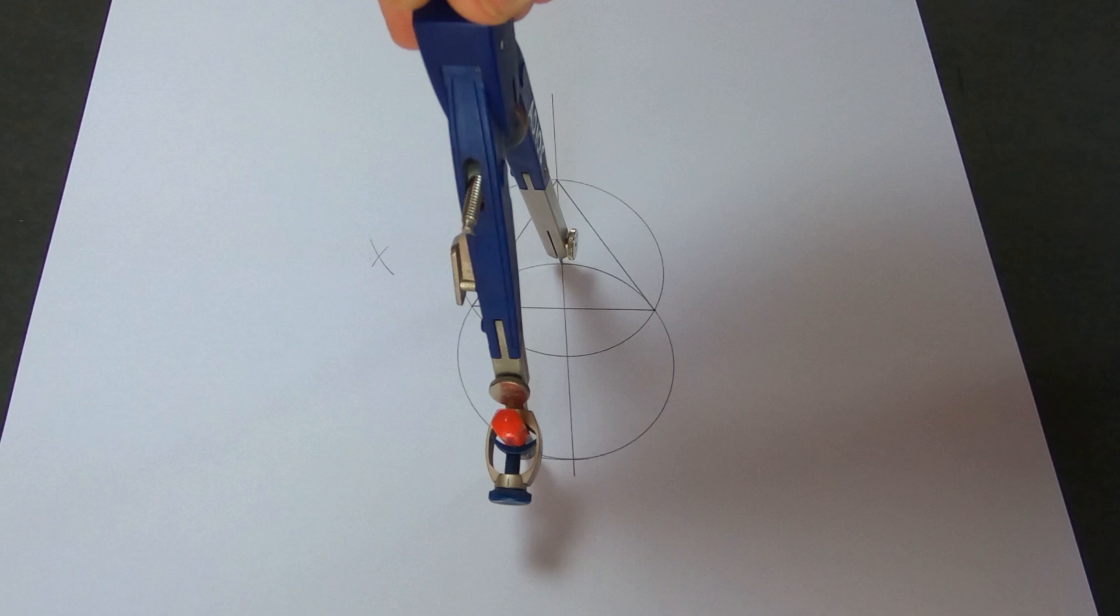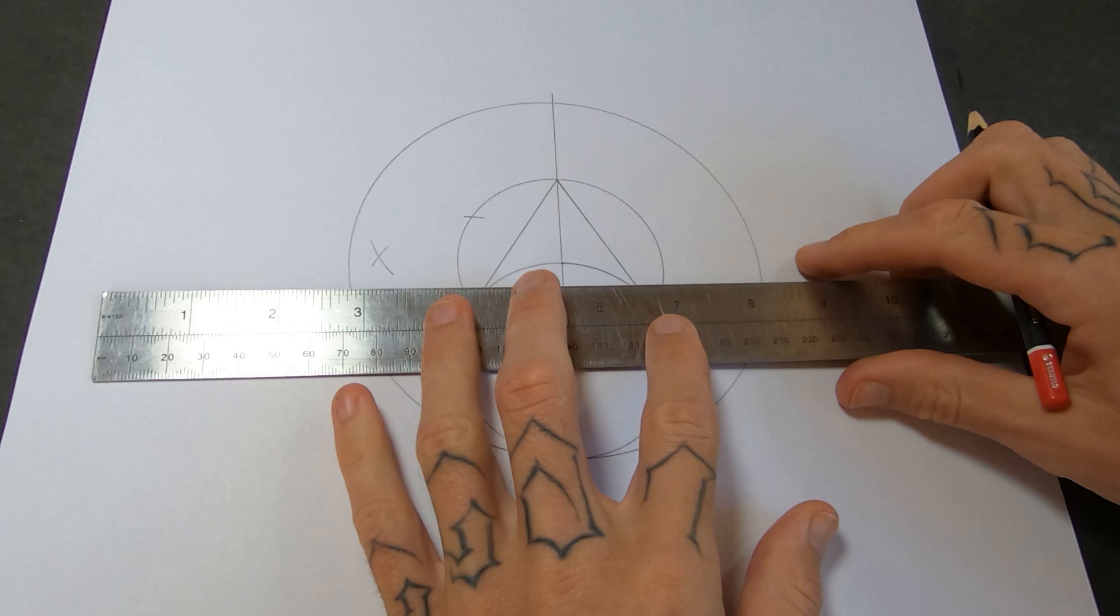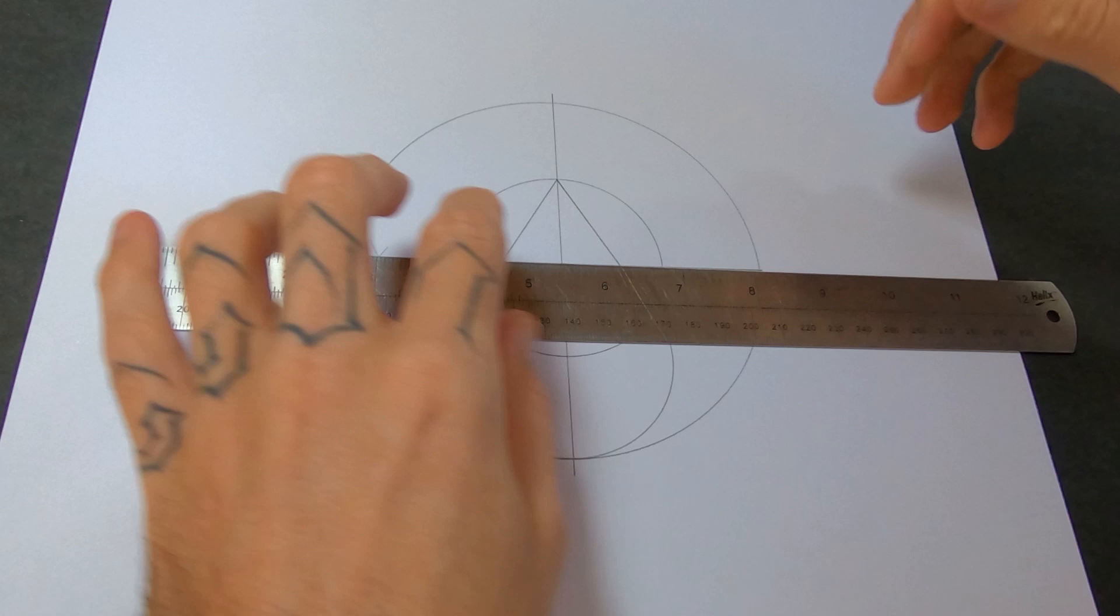Now that tells us how wide the horizontal line needs to be. And I'll draw that by connecting the two arcs on the left to the center point and just going all the way through. So now we've got our triangle in the middle. That's all sorted.